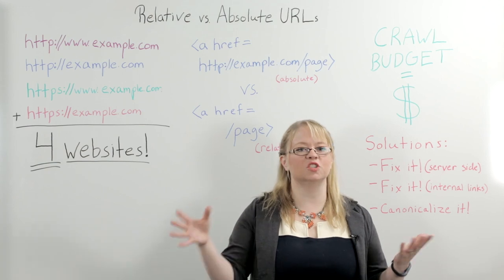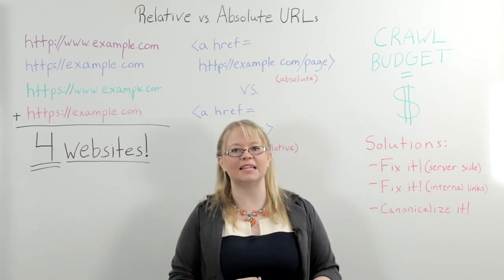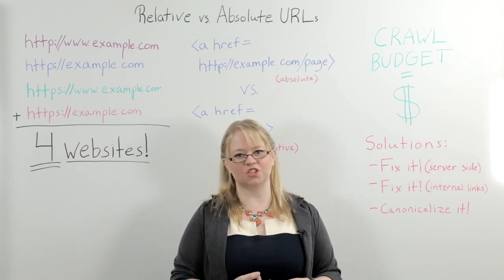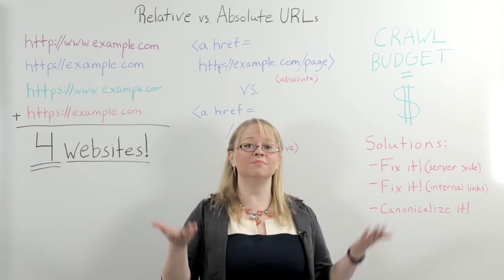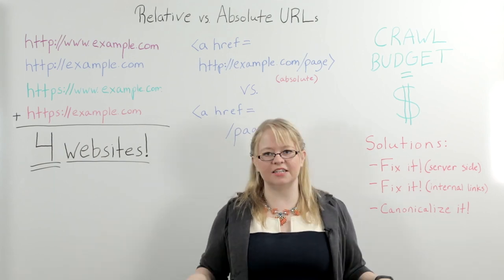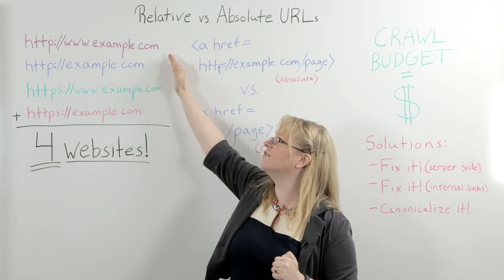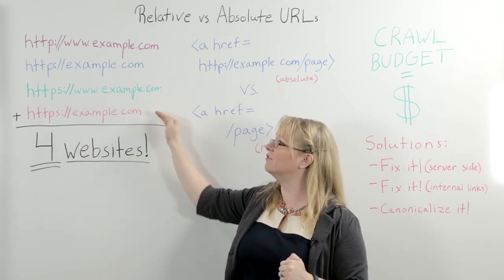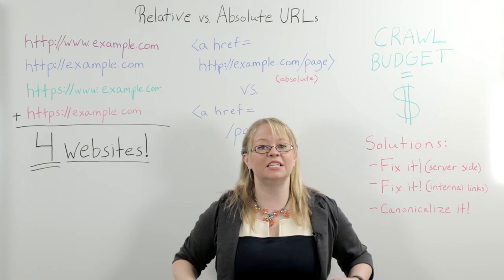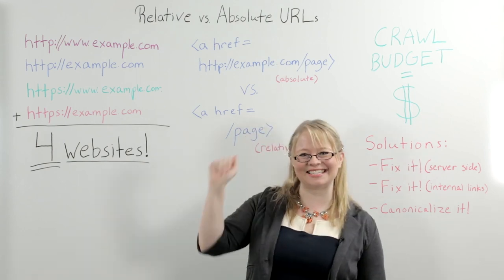Because when scrapers scrape your website and slap it up somewhere else, those canonical tags will often stay in place, and that lets Google know this is not the real version of the website. So in conclusion: relative links, not as good. Absolute links, those are the way to go. Make sure you're fixing these very common domain-level duplicate content problems. And if your dev team tries to tell you they don't want to do this, just tell them Ruth sent you.